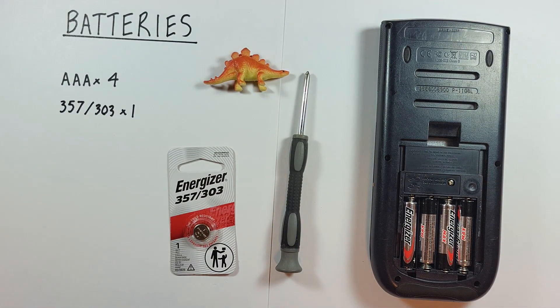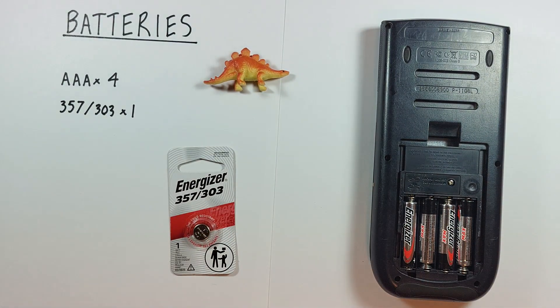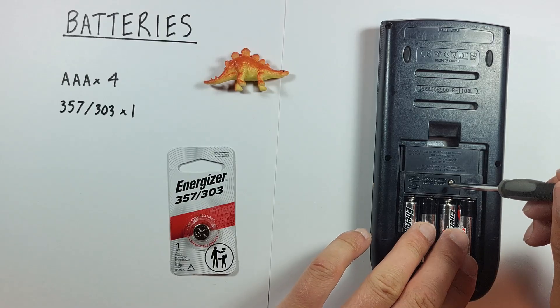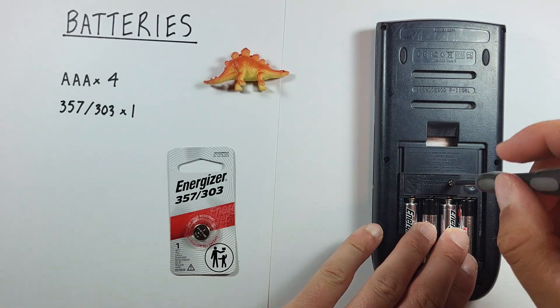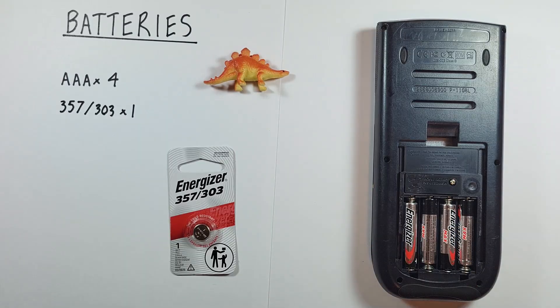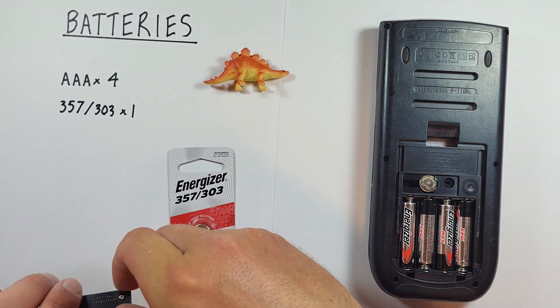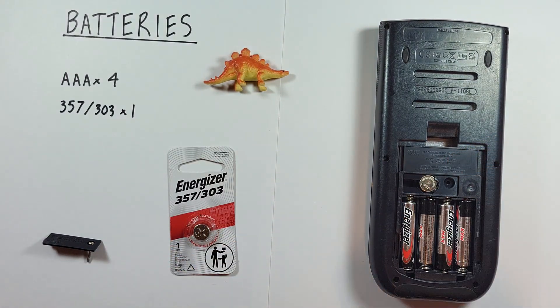Once we've got our AAAs placed we can grab our screwdriver and open up the backup battery panel here. Should open pretty easily. And there we can see our battery.